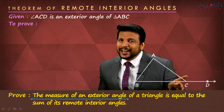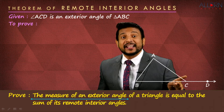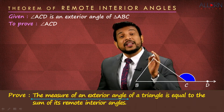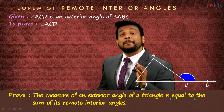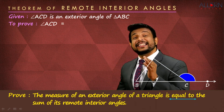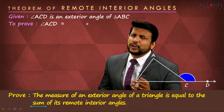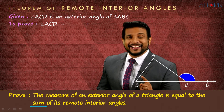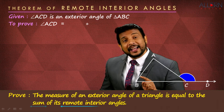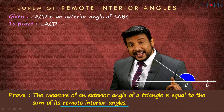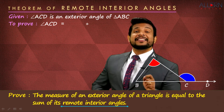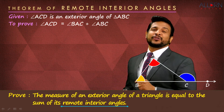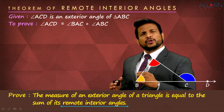That's the only given information for us. Now we need to prove: what are we supposed to prove? We need to prove that the measure of the exterior angle — that means angle ACD — is equal to the sum of the two remote interior angles, which is angle BAC plus angle ABC. That is what we are supposed to prove.